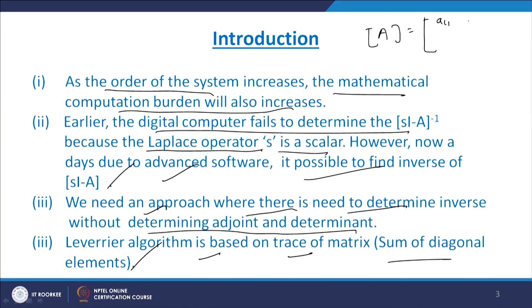For a matrix A with elements A11, A12, A21, A22, the trace equals A11 + A22 — that is, simple addition of the diagonal elements gives the trace. Using this concept alone, you can get the inverse of a given system matrix, and once we get the inverse, we can easily get the transfer function from a given state space model.